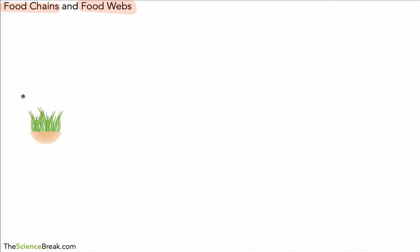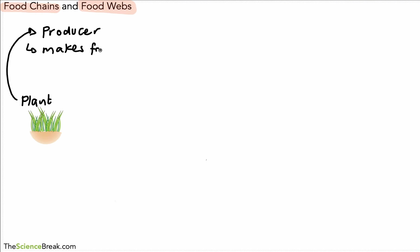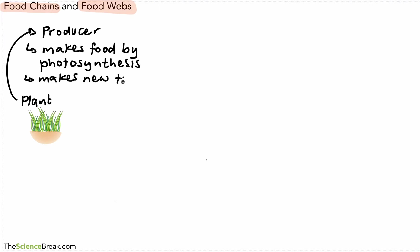At the beginning of our food chain, we always have a plant, or at least something that does photosynthesis. The plant, remember, we described as a producer in our last video. The reason we called it a producer is because a producer makes food for itself — it makes food by photosynthesis. It makes new tissue, new plant tissue. We can introduce a new word here: that new tissue can be referred to as biomass. Biomass is tissue within a living thing.